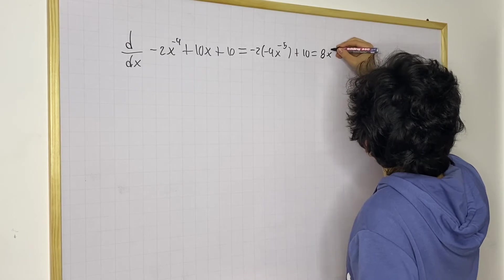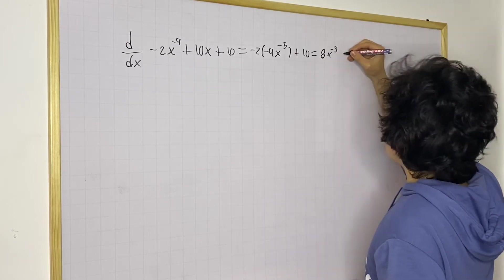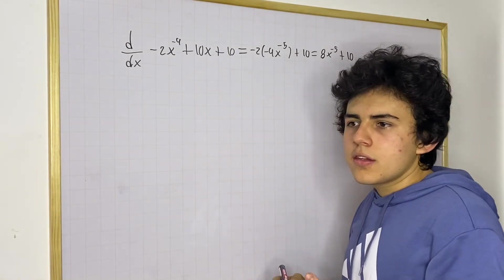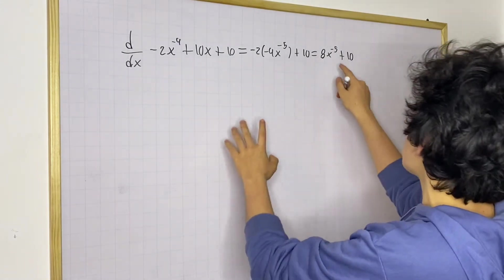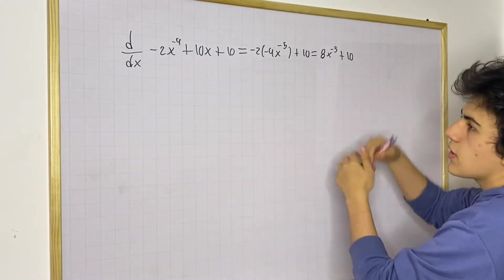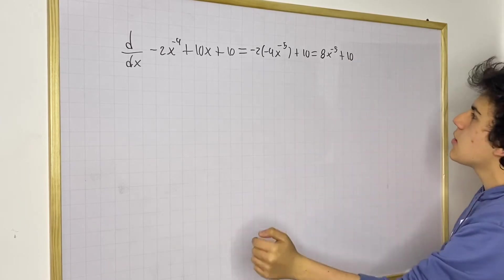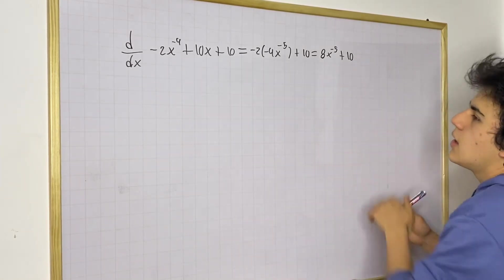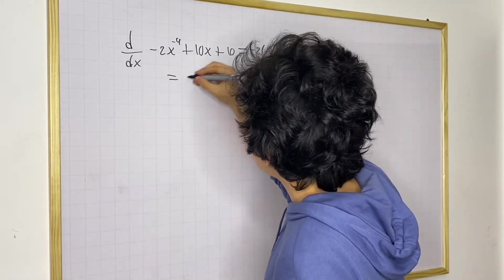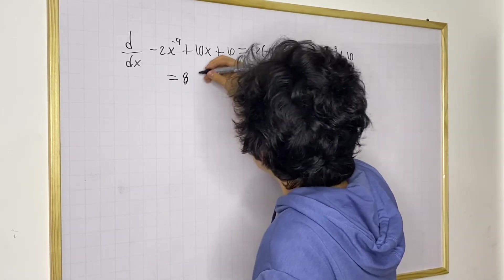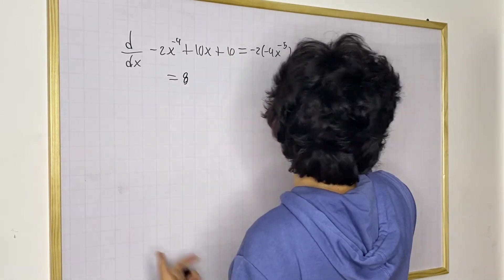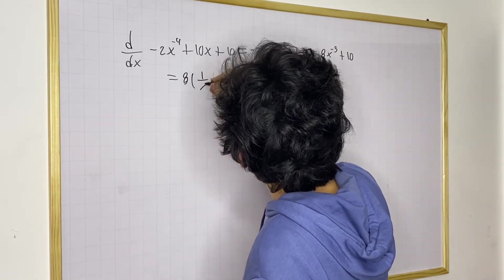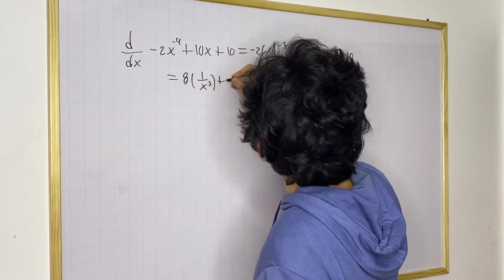We're gonna have 8x to the negative 5 plus 10. Now remember, you do not want to leave any negative exponents. So you just simply move around the exponents: this is 8 times the inverse of x to the fifth power, which is 1 over x to the fifth, giving us 8 over x to the fifth power plus 10. This is the derivative for this function.